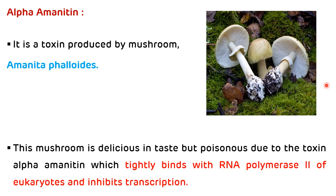This mushroom is delicious in taste but poisonous due to the toxin present in it, which is known as alpha-amanitin, which tightly binds with the eukaryotic RNA polymerase II and inhibits transcription. Eukaryotic RNA polymerase II is responsible for the synthesis of messenger RNA.